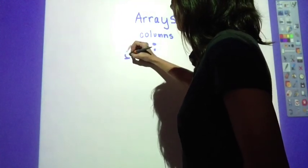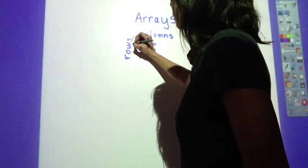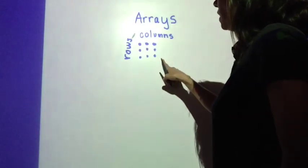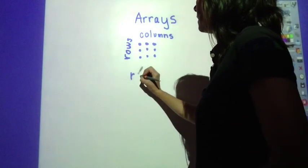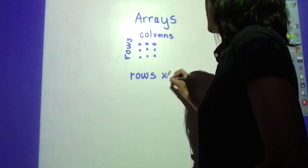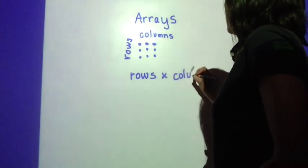For this side, these are rows. When we talk about an array, we'll talk about them as rows times columns.